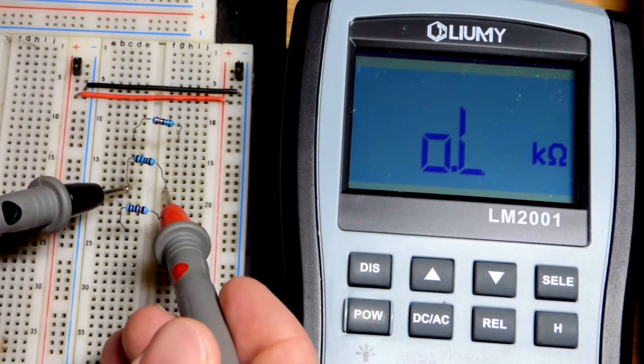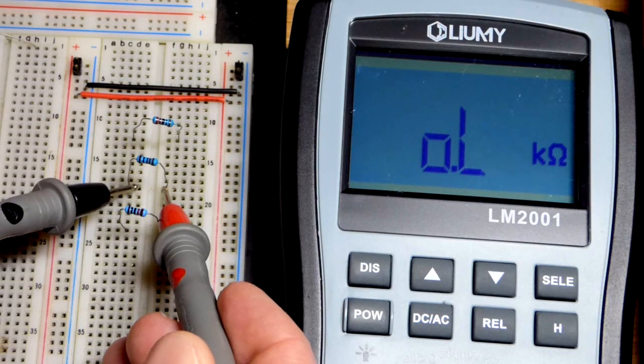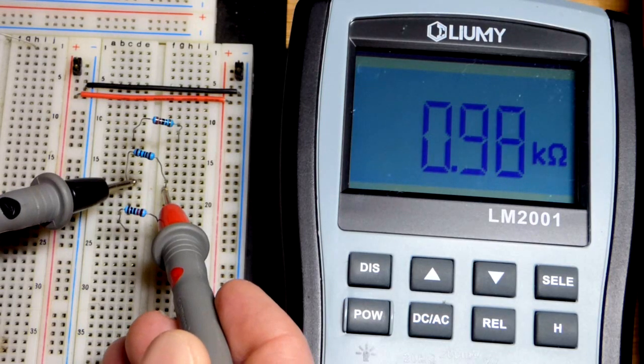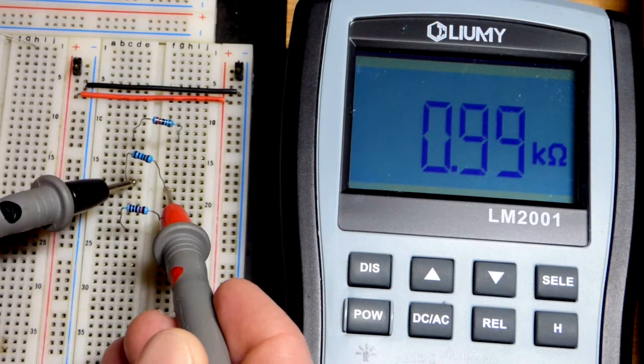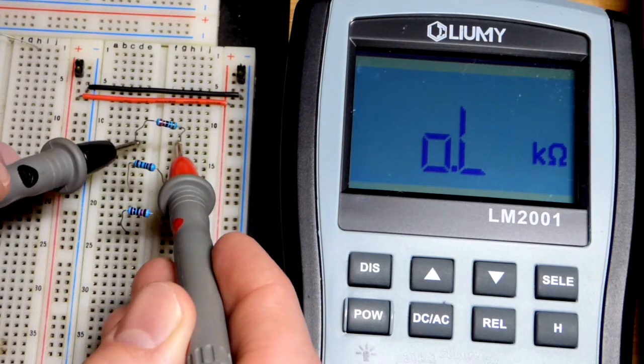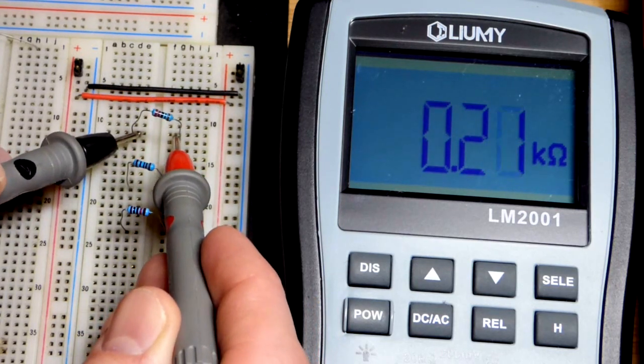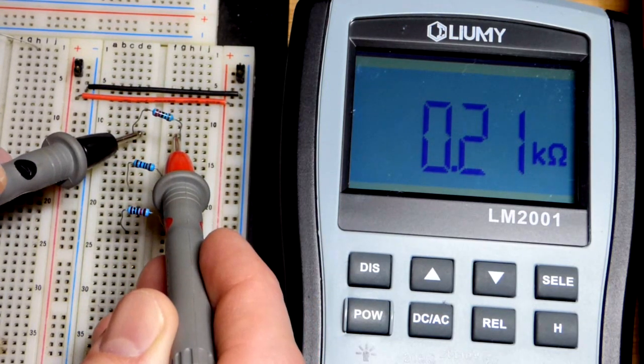Now we'll measure the 1,000 ohm resistor. Once I get a good connection there, you can see basically 1k. And the 220 ohm resistor, we got 0.21.